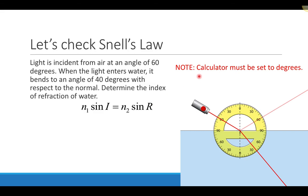One important thing is that your calculator must be set in degrees, because if it's set in radians, you'll get incorrect values and it will become very frustrating. In our previous presentation, we saw light starting off in air incident at an angle of 60 degrees, bending into water at an angle of 40 degrees. Let's apply Snell's Law to check those results.